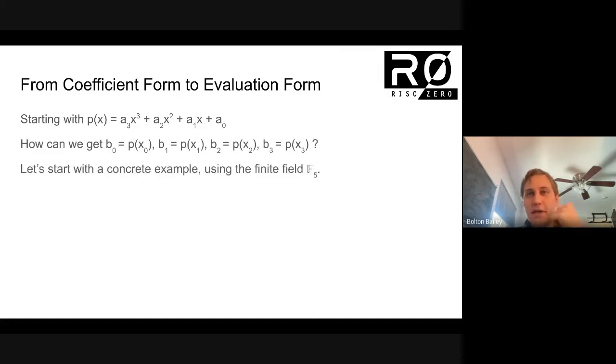Perhaps we can start with a nice concrete example using the finite field F5. This is the finite field that has five elements. You can think of it basically as the clock arithmetic or the modular arithmetic that Paul presented a few weeks ago. Whenever you get a number, you take the remainder when dividing by five and that gets you your new number.